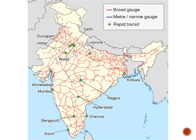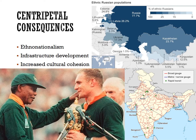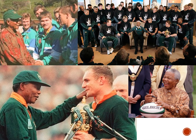Even the presence of a large and influential city can be a centripetal force that draws people together. Centripetal forces can also bring about greater cultural cohesion — multinational states may promote this through shared icons or symbols like a national anthem, a flag, or a national sports team. South African President Nelson Mandela used the country's national rugby team to unify the nation after the end of the centrifugal apartheid system.